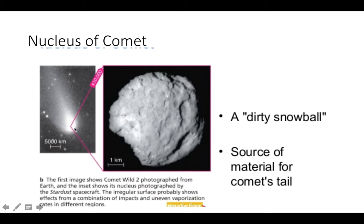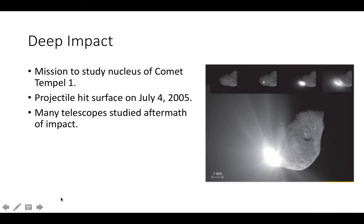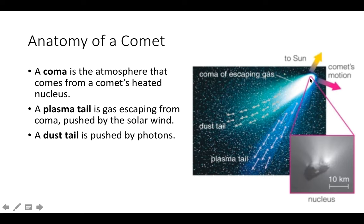The nucleus of a comet is a dirty snowball and is the source of material for the tail. Once it starts to get warmed up by the sun's radiation, the ices and solids get converted into gas — hence the tail. We've been studying comets; there was a mission to study the nucleus of comet Tempel 1, and projectiles hit its surface on July 4th, 2005. The coma is the atmosphere that comes from the comet's heated nucleus. You can get two different tails: a dust tail pushed by photons, and a plasma tail pushed by the solar wind from the sun. The plasma tail lines up with the sun, and the dust tail gets pushed by photons.